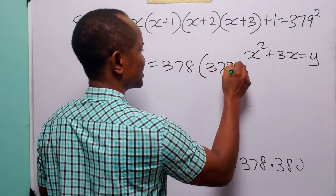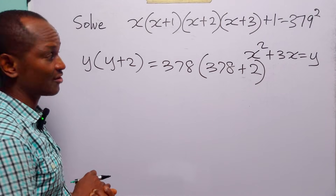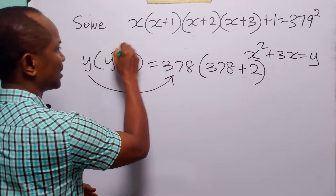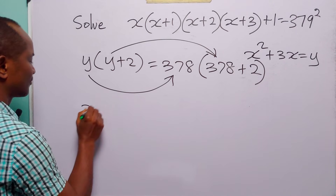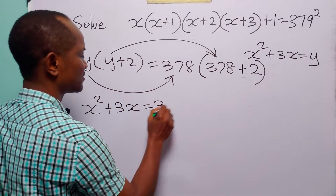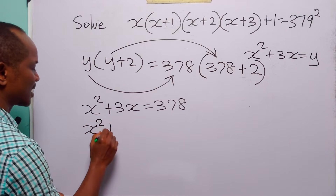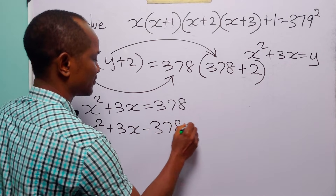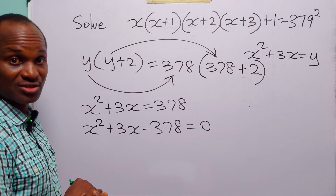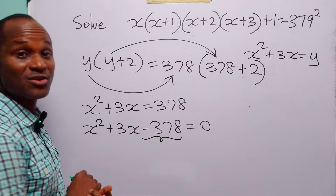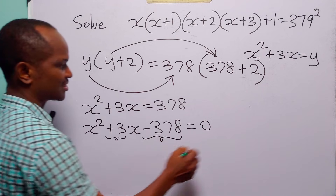This is equal to 378 multiplied by 380, which is 378 times (378 plus 2). By comparing the two sides of the equation, it is very easy to see that y is equal to 378. So we have that x squared plus 3x is equal to 378. Rearranging this quadratic equation, we have x squared plus 3x minus 378 equals 0. We can solve this by factorization — we need to find factors of minus 378 that add up to plus 3.